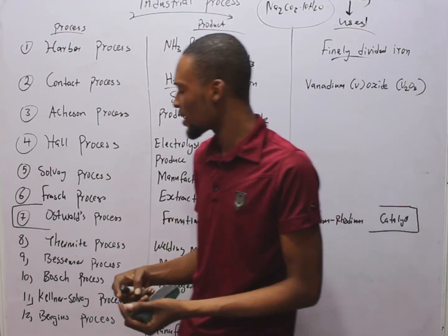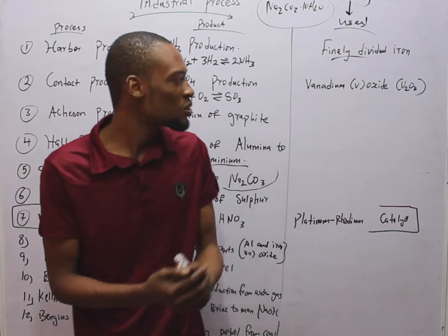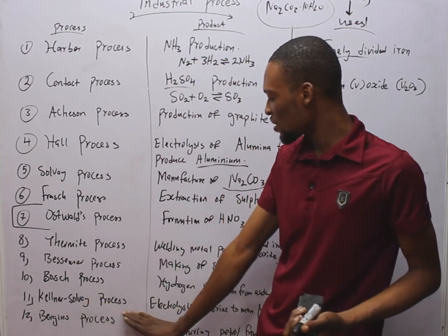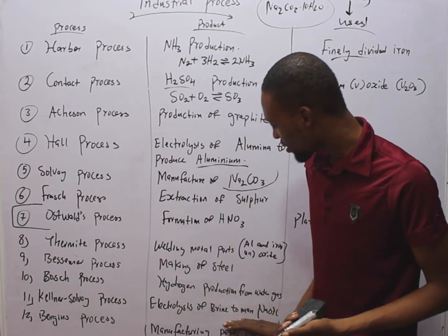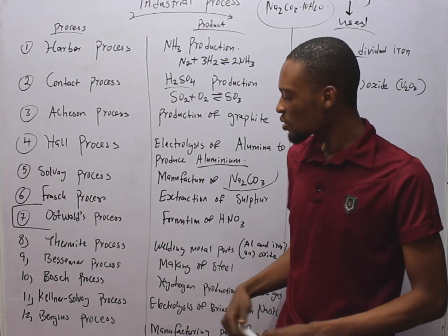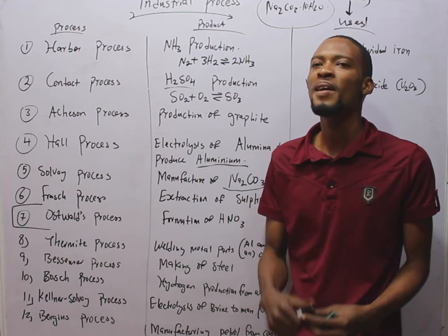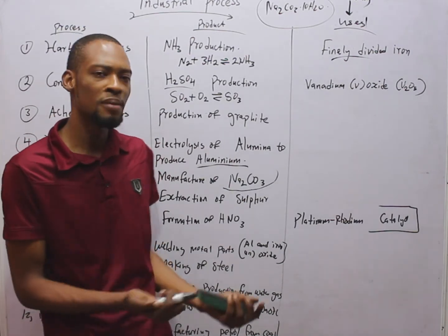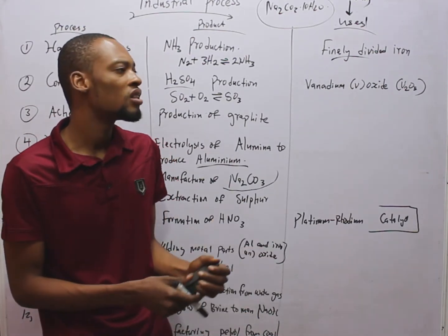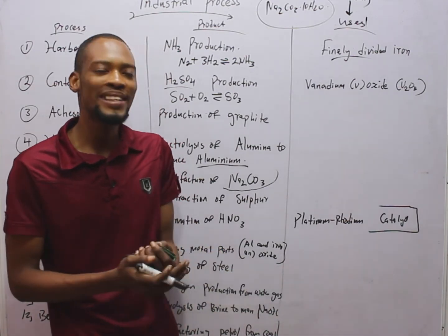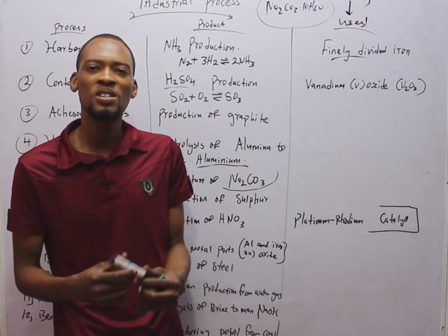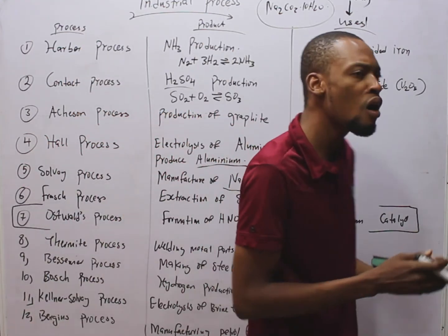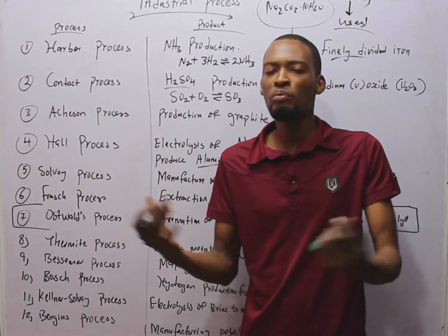The Bosch process is used to manufacture hydrogen from water gas. So if you are asked which process is used to manufacture hydrogen from water gas, you simply say Bosch process. The Chlor-alkali process is used in the electrolysis of brine to manufacture sodium hydroxide. Brine is simply concentrated sodium chloride. When it is in dilute form it is normal sodium chloride, but when it is concentrated it is called brine. A concentrated solution means we have more of the compound than water.